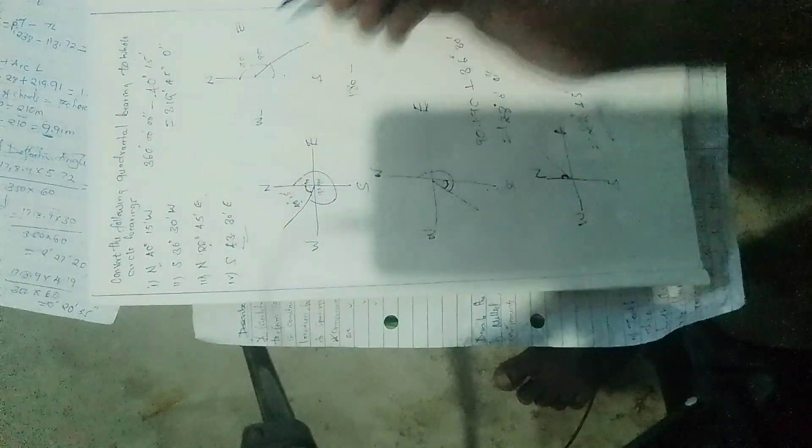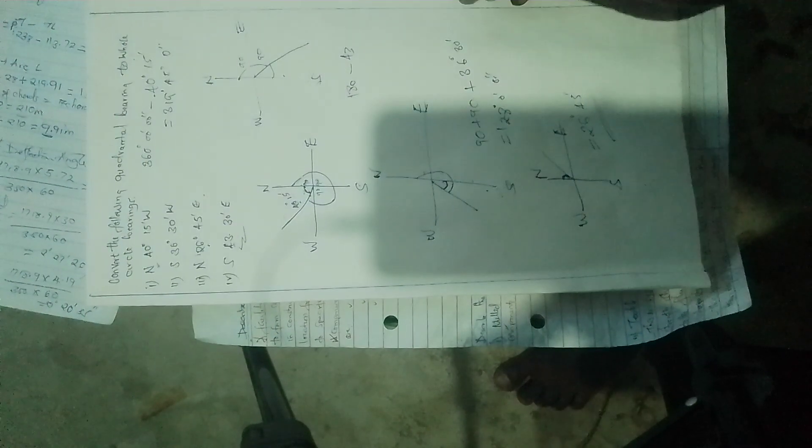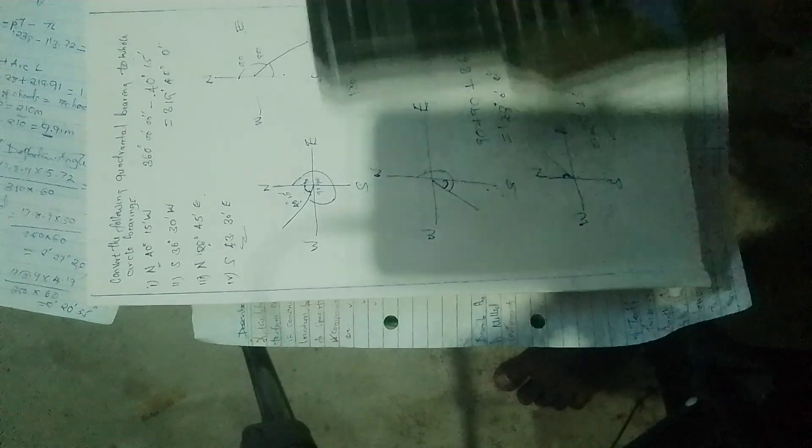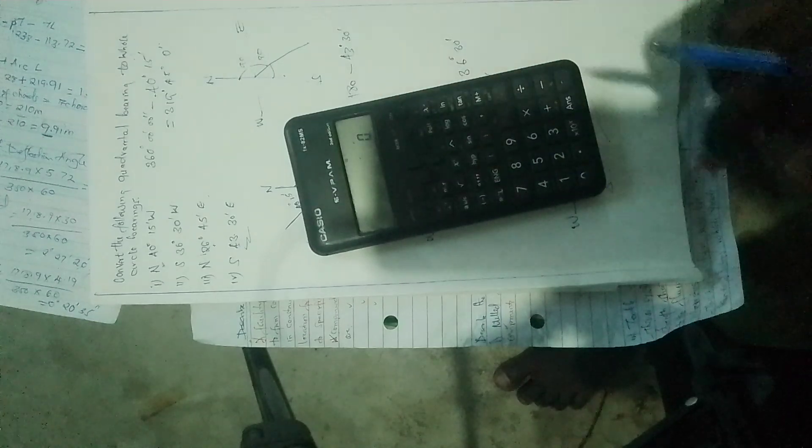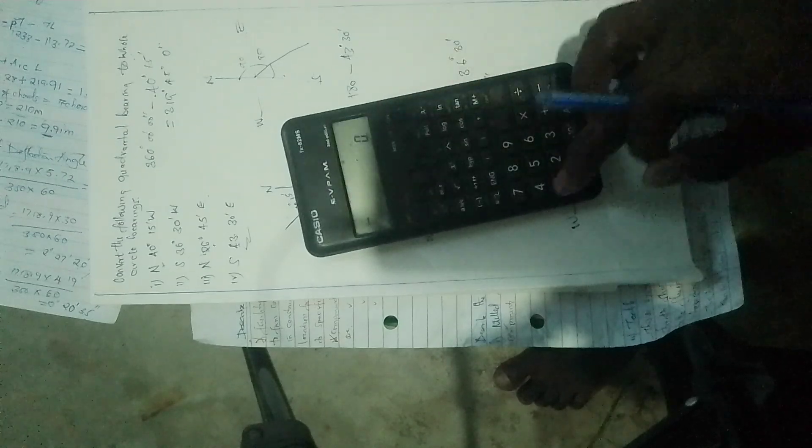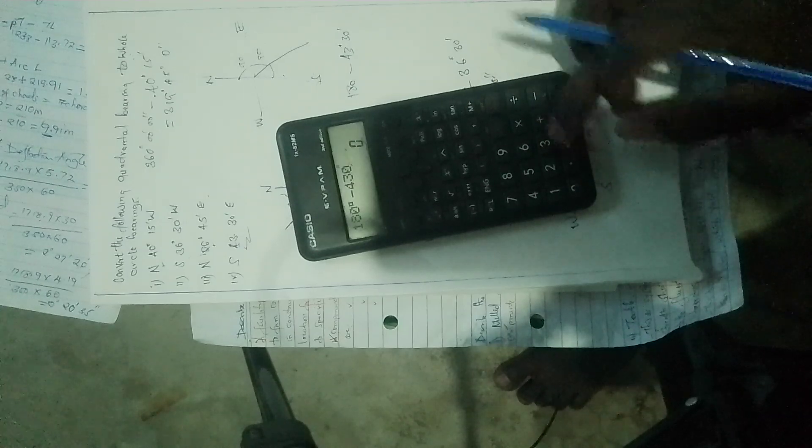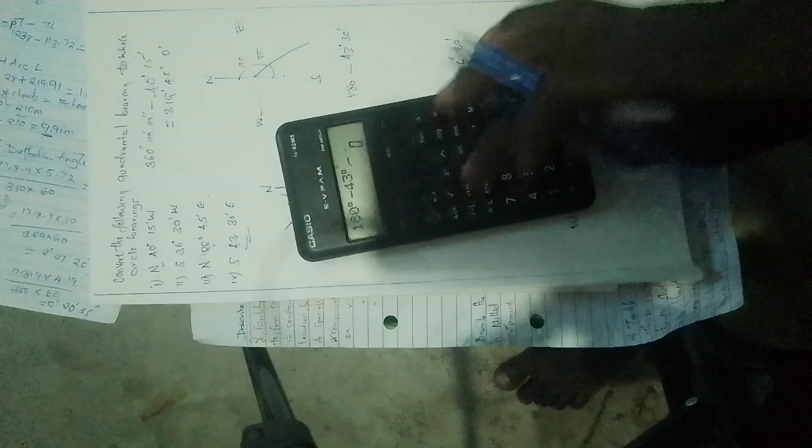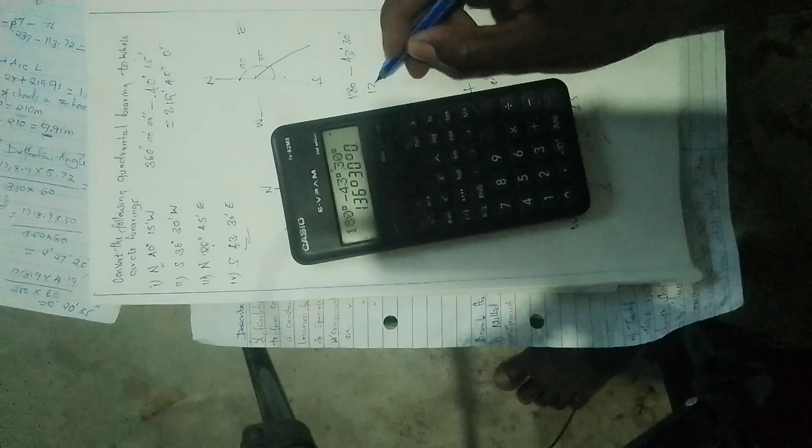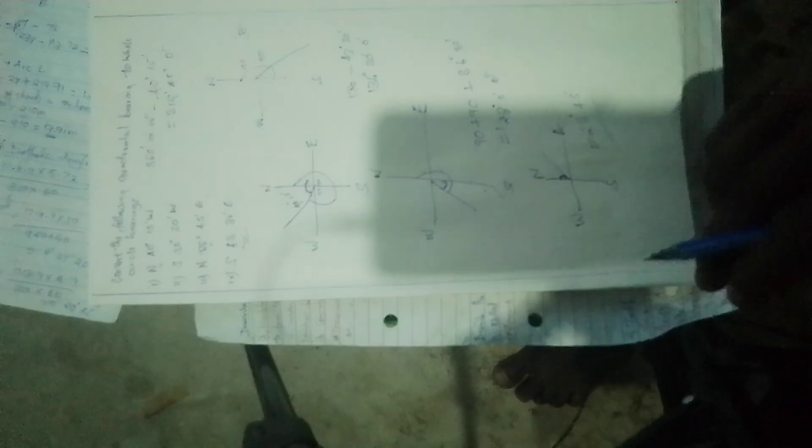43 degrees 41 minutes. So 180 degrees minus 43 degrees 41 minutes, we get 136 degrees 19 minutes zero seconds.